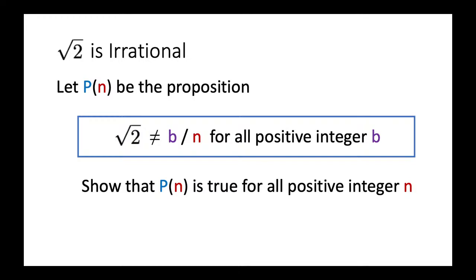We want to show P(n) is true for all positive integers n. If we can show this, it means √2 is not equal to the ratio of any two positive integers, so it is irrational. Since √2 is not negative and not zero, we only need to consider b as a positive integer and n as a positive integer.